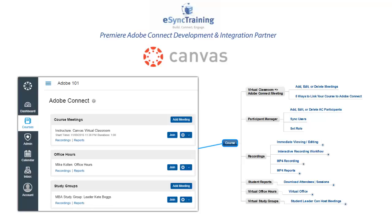We also have two very interesting unique features: the ability to do virtual office hours, allowing an instructor to easily decorate their Canvas courses with their virtual office hours, or providing the ability for students to form their own study groups, host their own Adobe Connect meetings, or allow the teacher to create study groups, break them into teams, and allow a team leader to drive an Adobe Connect meeting.